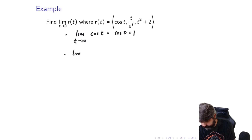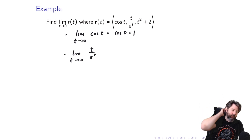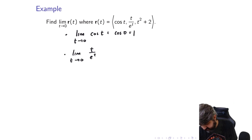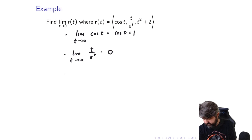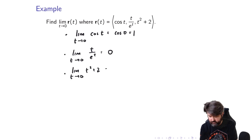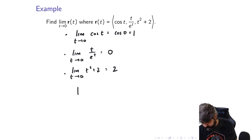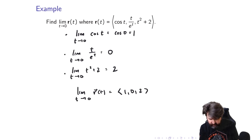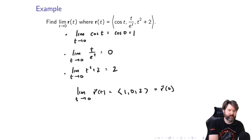The limit as T approaches 0 of T over e to the T: T goes to 0 as T goes to 0, and e to the T goes to 1, so you get 0 over 1, which is just 0. The limit as T approaches 0 of T squared plus 2: that's a polynomial, continuous for all real numbers, so it's just 0 plus 2, which is 2. So the limit as T goes to 0 of R of T is the vector (1, 0, 2), which turns out to be exactly R of 0, so it is continuous at 0.